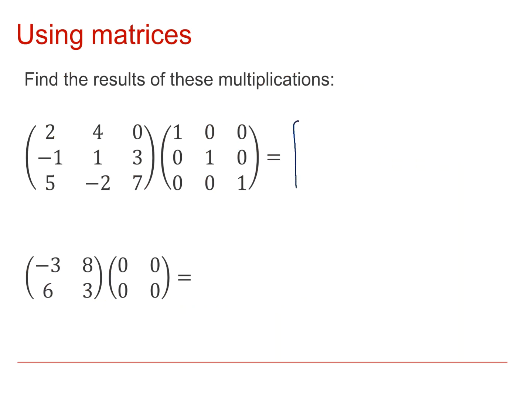OK. First row times first column, 2 plus 0 plus 0 is 2. First row second column, 0 plus 4 plus 0 is 4. Third column, 0 plus 0 plus 0 is 0.